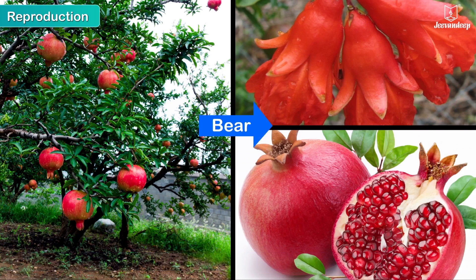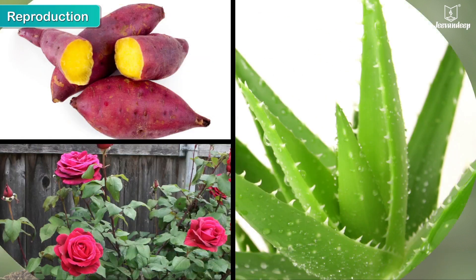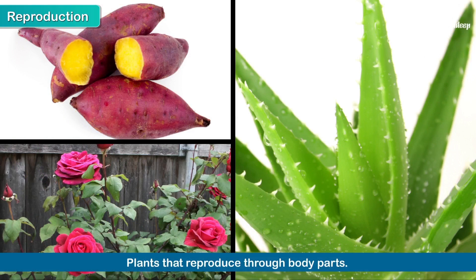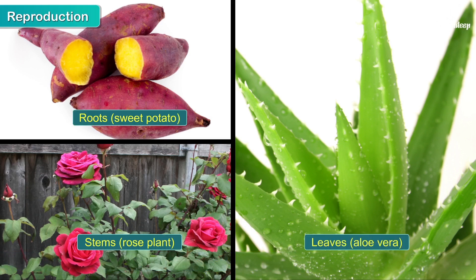We know that plants bear flowers, fruits and seeds. Most plants reproduce through seeds. However, there are some plants that reproduce through body parts like roots, e.g. sweet potato; stems, e.g. rose plant; and leaves, e.g. aloe vera.